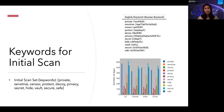For the initial scan to identify vault apps on the iOS app store, we used a scan set of 11 keywords: private, sensitive, sensor, protect, decoy, privacy, secret, hide, vault, secure, and safe. The equivalent of those keywords in the Russian app store was identified by translating those keywords into Russian. Similarly, we did it for the Chinese app store. For the Indian app store, most applications had their descriptions and titles in English, so we didn't need to translate those keywords.